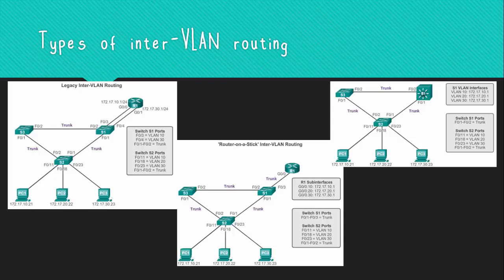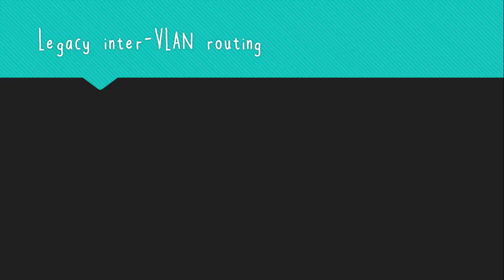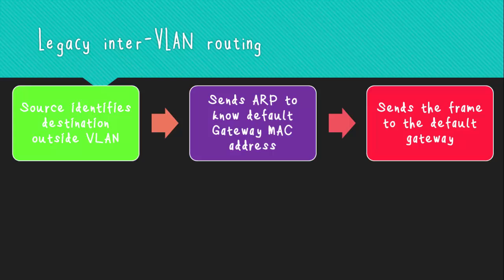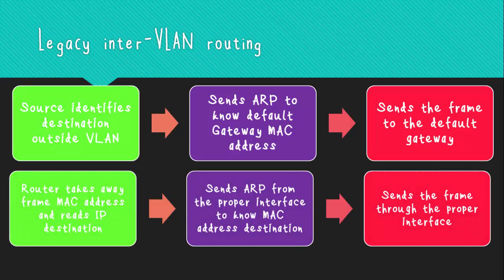The most basic process of InterVLAN routing is using legacy. In order for this to work, a router needs to have an IP address within the same VLAN range configured at each physical interface so it can communicate. The source determines that the destination is outside the local VLAN, so it sends the frame to the default gateway that was previously configured, and then the default gateway sends it to the proper VLAN. The source determines the MAC address of the router interface by sending an ARP request, which will be answered by the router.